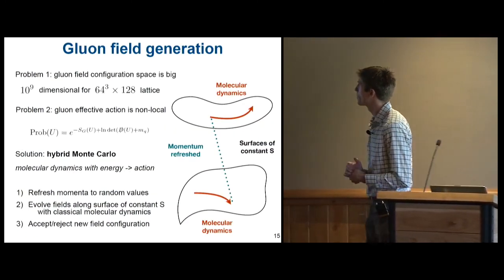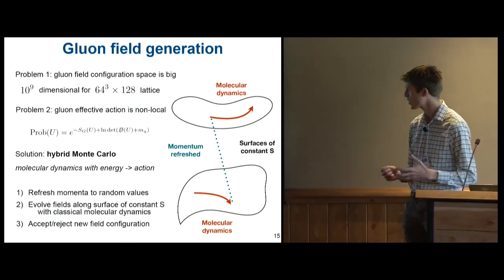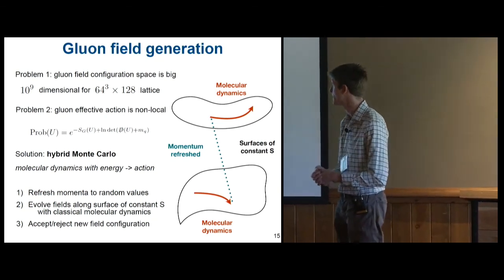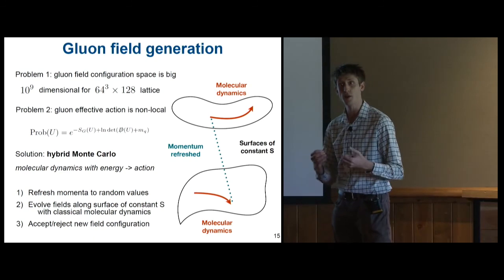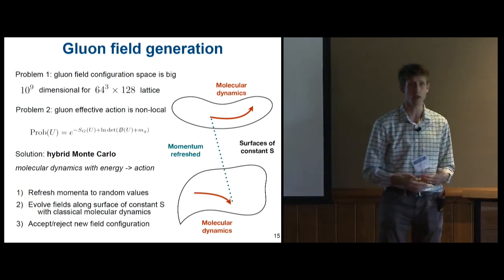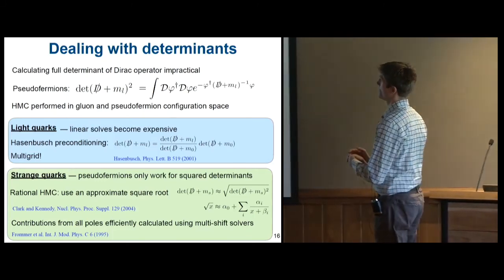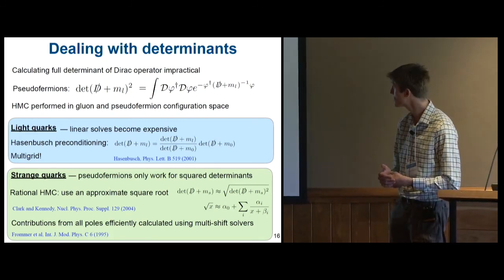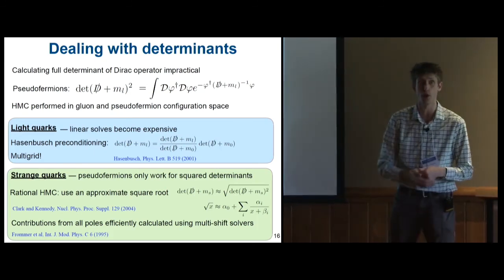Then the algorithm that we're trying to solve is generating these one-field configurations. And this is just Monte Carlo, but it's a weird sort of Monte Carlo because we have a non-local action and a billion-dimensional configuration space. So the standard technique is something called hybrid Monte Carlo, where you use molecular dynamics to explore your configuration space while keeping your action constant so that you can get decently high accept-reject at the end of the day. But it's still not quite enough, and we have these determinants to deal with. We can't calculate them exactly because they're billion by billion dimensional matrices.